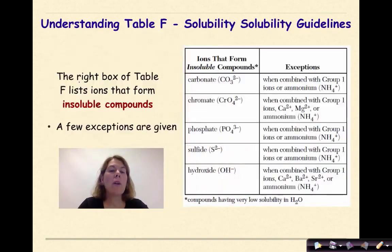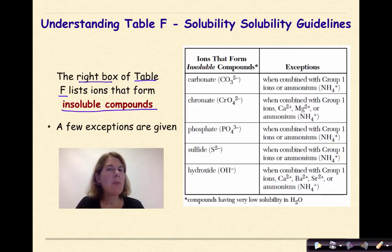Let's talk about the right box of table F. This box lists ions that form insoluble compounds. In other words, they will stay as a solid. They will not dissolve in water. The other term that we use for this is that it will stay as a precipitate. Or, if these two compounds come together in a double replacement reaction, and you form one of these compounds in an aqueous solution, it will precipitate out. It will form a solid. Again, we have a few exceptions that go hand in hand with our box on the left. So, ions that form insoluble compounds, compounds that will not dissolve in water. Again, they will stay as a solid.